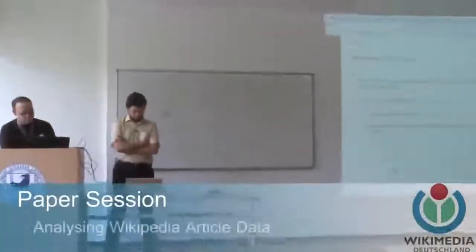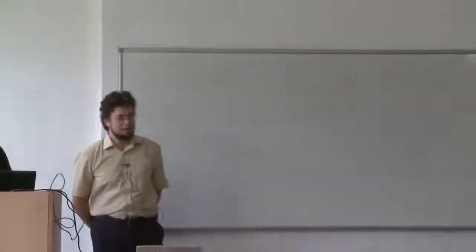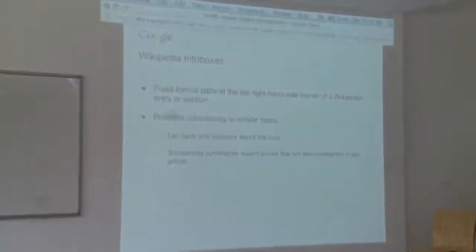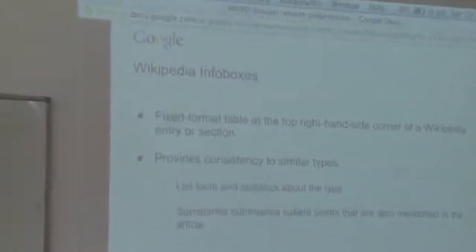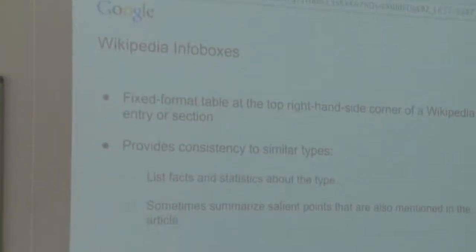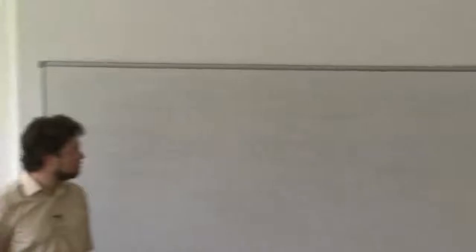I'll start with some motivation about why we are releasing a dataset of Wikipedia Infobox attributes with all the history. Wikipedia Infoboxes are fixed format tables that appear in Wikipedia entries, usually at the top right-hand side corner. They help in providing consistency to entities of similar types — different scientists will have an Infobox of type scientist, different cities will have an Infobox of type city, containing facts and statistics about that type.